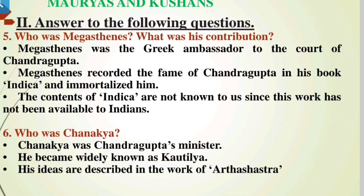Fifth question: Who was Megasthenes? What was his contribution? Megasthenes was the Greek ambassador to the court of Chandragupta. He recorded the fame of Chandragupta in his book Indica and immortalized him. The full contents of Indica are not known to us since this work has not been available to anybody. Sixth question: Who was Chanakya? Chanakya was Chandragupta's minister. He became widely known as Kautilya. His ideas are described in the Arthashastra, which mainly covered the politics and economic activities of that time.